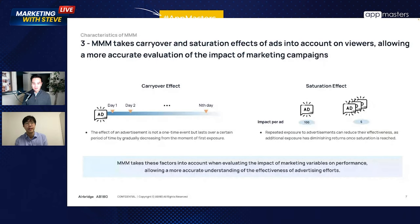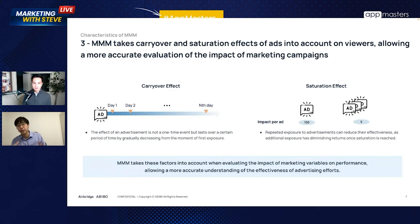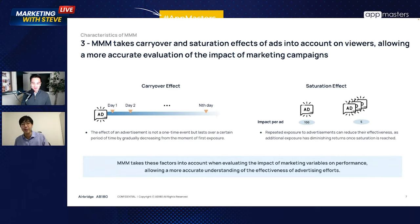There are two kinds of effects MMM accounts for: carryover effect and saturation effect. The carryover effect is the long-term influence of advertisements over time — on day one it has the strongest effect, then it decreases. The saturation effect is like eating ice cream: one is great, but 100 makes you unhappy. The marginal utility from each ad decreases over time. MMM naturally accounts for both of these effects because it's based on statistical methodology.